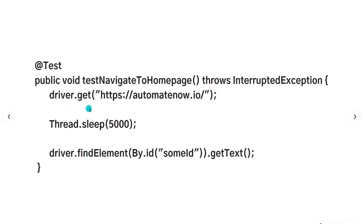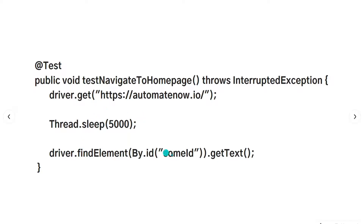Here we have a test that is going to navigate to automatenow.io. Then we use Thread.Sleep to pause for 5 seconds, and then we try to locate an element to get its text. The way this works is that first it navigates to automatenow.io, then it comes to the Thread.Sleep statement and pauses for the entire 5 seconds before it moves on to the next statement — it will not continue after 1, 2, or 3 seconds.